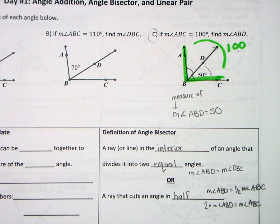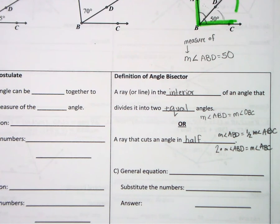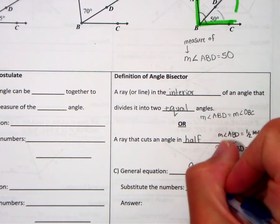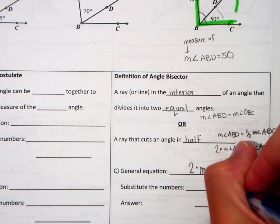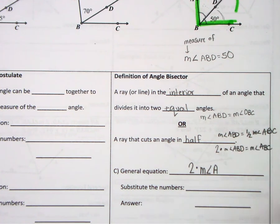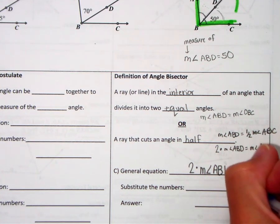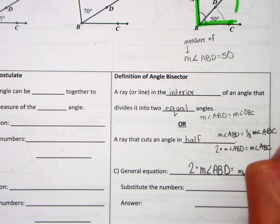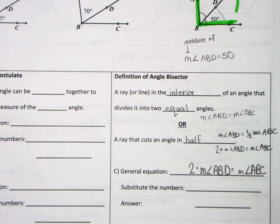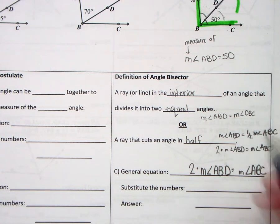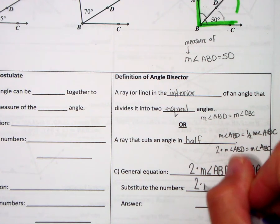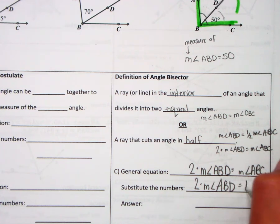So this should feel very familiar—it should feel just like the segment addition that we were doing. So our general equation might look something like this. General equation means I'm using letters, not numbers, we're using the points and the notation. Then we're going to substitute what we know, which we only knew that this was 100 to begin with, and then solve and find our answer. So the measure of this angle that I didn't know when I started is 50.